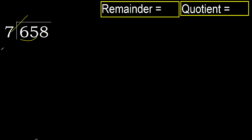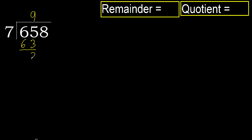7 multiplied by which number is nearest to 65 but not greater? 7 multiplied by 9 is 63, which is not greater. 65 minus 63 is 2. Next, bring down 8 to get 28. 7 multiplied by 5 is 35, which is greater. 7 multiplied by 4 is 28, which is not greater.